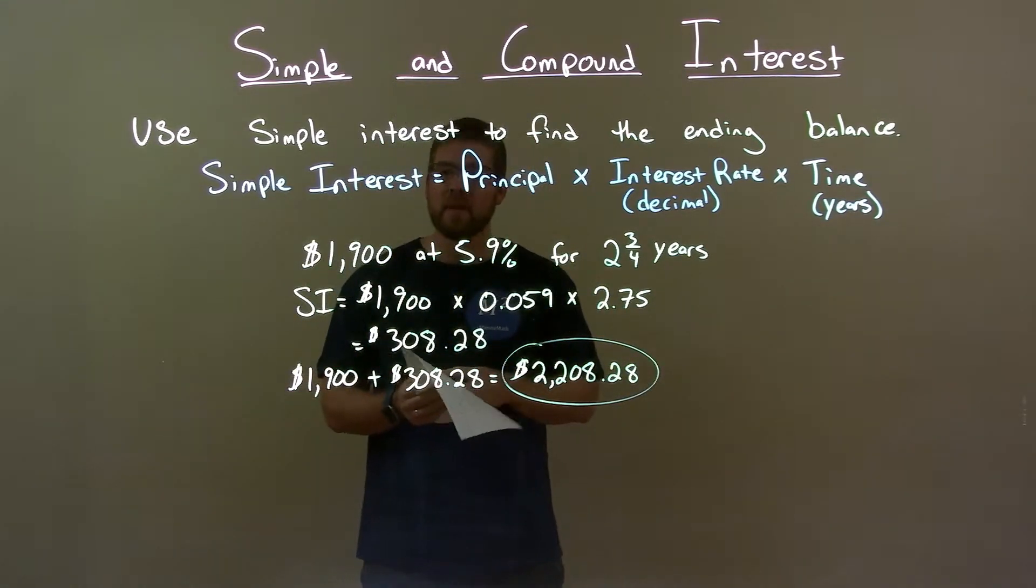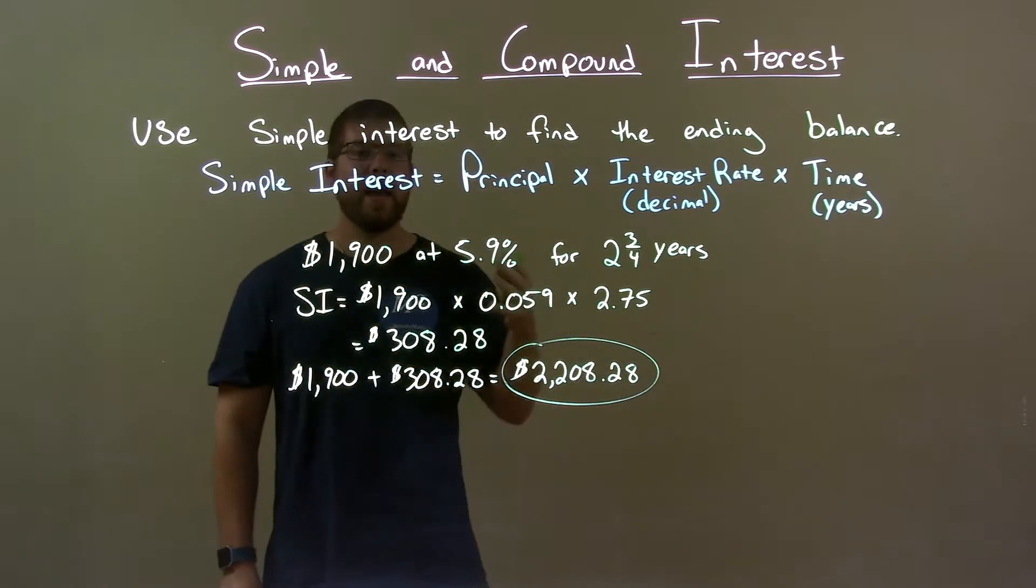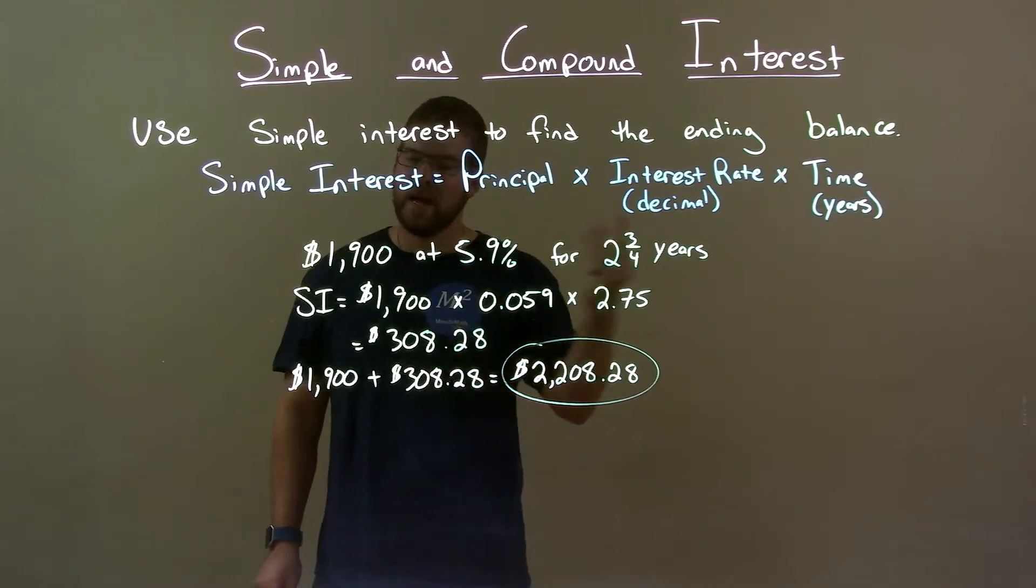Quick recap: we're given $1,900 at 5.9% for two and three quarters years, and we'll find the ending balance using simple interest.